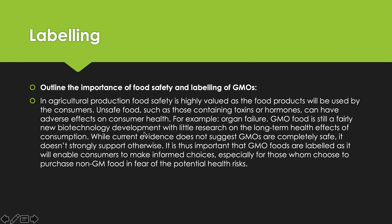One of the things we need to cover, and we talked about ethical reasons, is the labelling of GMOs. In agricultural production, food safety is highly valued as food products will be used by consumers. Unsafe food — such as those containing toxins or hormones — can have an adverse effect on consumer health, for example organ failure in extreme cases. GMO food is still a fairly new biotechnology development with little research on the long-term health effects. While current evidence does not suggest GMOs are completely safe, it doesn't strongly support otherwise. It is thus important that GMO foods are labelled, enabling consumers to make informed choices, especially those who choose to purchase non-GMO food in fear of potential health risks.